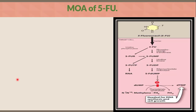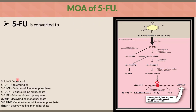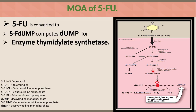Mechanism of action of 5-fluorouracil: 5-fluorouracil enters the target cell and is converted inside the cell to 5-deoxyuridine monophosphate, which competes with deoxyuridine monophosphate for the enzyme thymidylate synthase. As a result, deoxyuridine monophosphate formation is inhibited. dTMP is needed for DNA synthesis and cell growth.